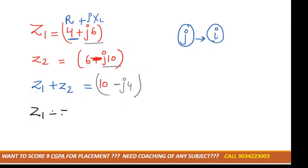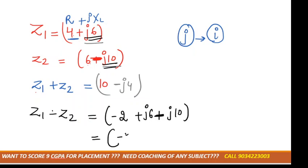Now suppose if we want to subtract these two terms, then again real term is subtracted with the real term, 4 minus 6, that is minus 2. And the imaginary term is subtracted with the imaginary term, that would be plus j6 minus of minus j10. So that would become plus j10. So what is the answer? Minus 2 plus j16.